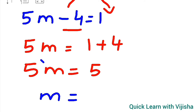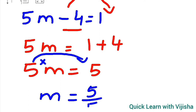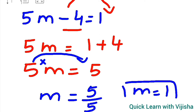We need to find only the value for m. The 5 is extra and in multiplication form, so we take it to the other side as division, giving m equals 5 upon 5. So the value for m is 1. I hope you are understanding the concept.